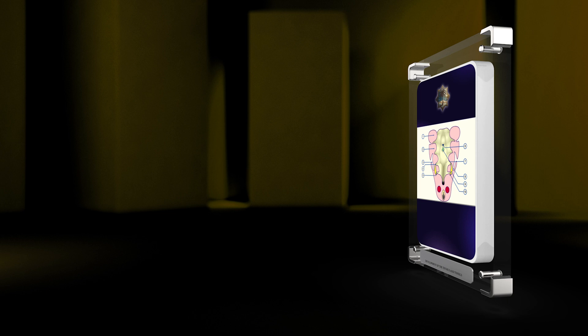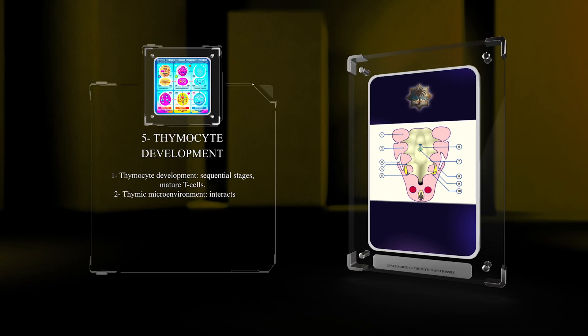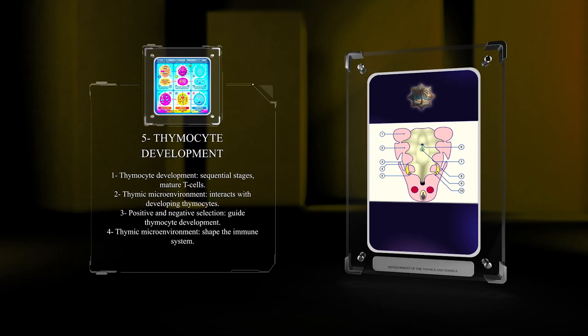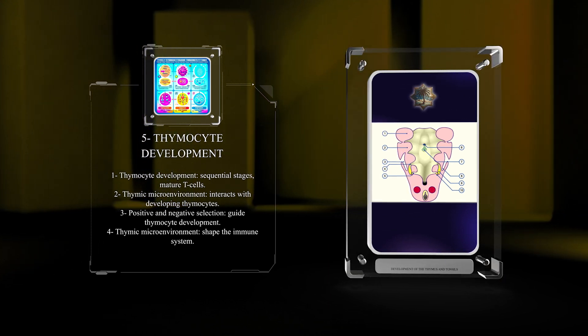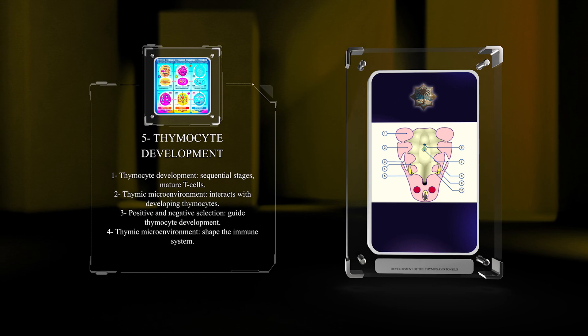Thymocyte development involves sequential stages leading to mature T-cells. The thymic microenvironment interacts with developing thymocytes during positive and negative selection. These interactions guide thymocyte development and shape the immune system.